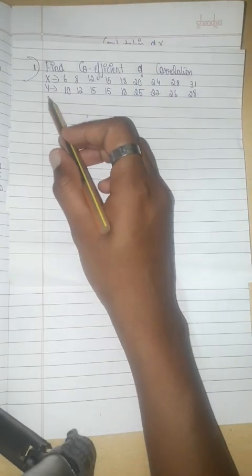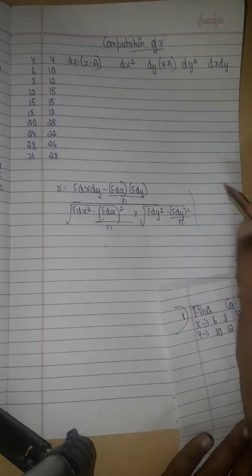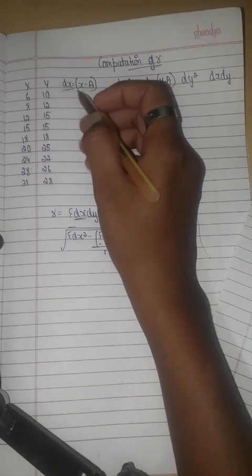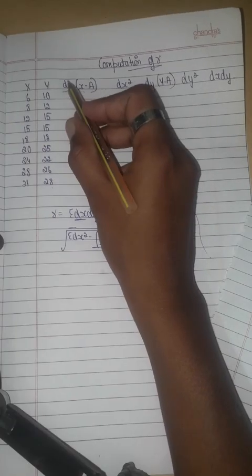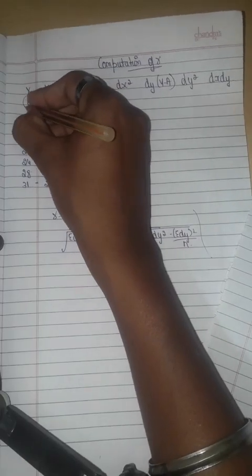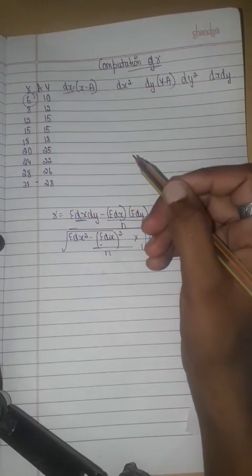Now I'm going to explain the first problem on correlation — find the coefficient of correlation. We need the x values and y values. To find dx, we calculate x minus a, where a should be the least number of x, which is 6.